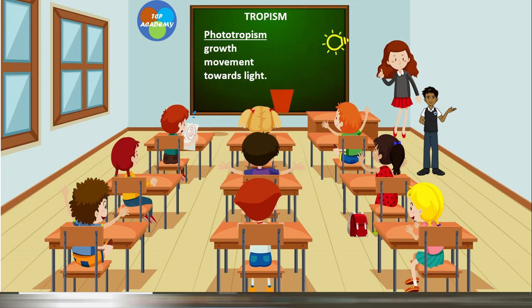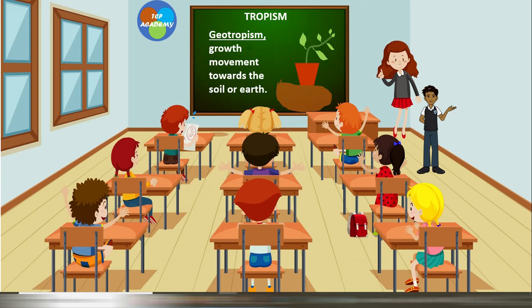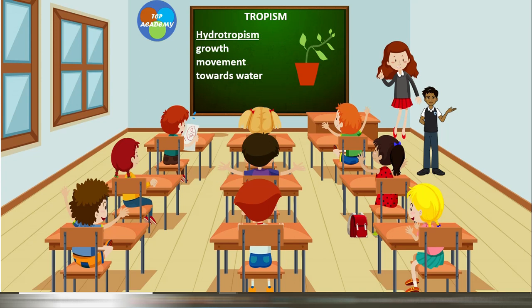With phototropism, the plant will grow towards light, as shown in the animation on screen. With geotropism, the plant will grow towards the earth — the roots show positive geotropism as they grow towards the soil. With hydrotropism, which is a growth movement towards water, the roots are all growing in the direction of the water.